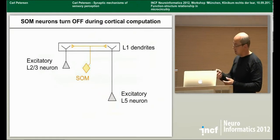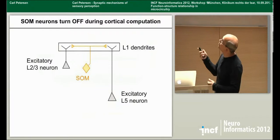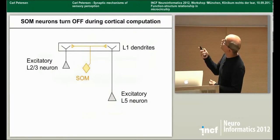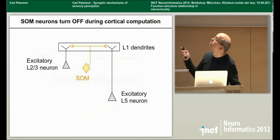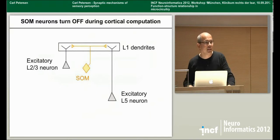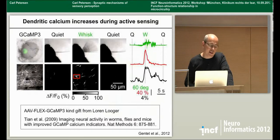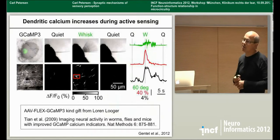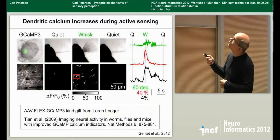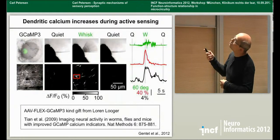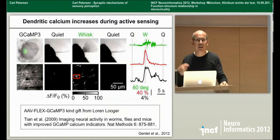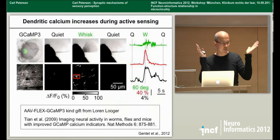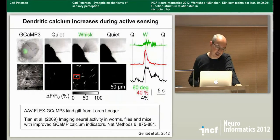Somatostatin neurons are interesting because their axonal projections innervate layer one. Whenever they fire, they release GABA onto distal dendrites in layer one. If you turn off this distal inhibition, you'd expect the distal dendrites might become more active. Using a genetically encoded calcium indicator GCaMP3 expressed in excitatory neurons, when the animal is sitting quietly there's very little activity in layer one dendrites. But when the animal moves its whiskers, dendrites light up robustly. As somatostatin neurons turn off during whisking, inhibition is released, and the distal dendrites become more active — perhaps firing calcium spikes or NMDA spikes.